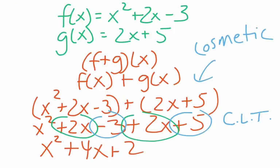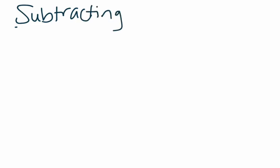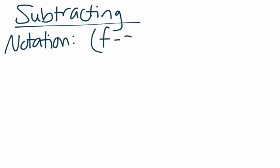With subtraction, you would have a similar notation. Once you get the hang of this, math is consistent, so it all works the same way. You would see f minus g of x — that's how you say it, 'f minus g of x' — where f minus g is what you're going to do to the two functions, and x indicates what they are functions of. It just pretty much means this is the variable in there.